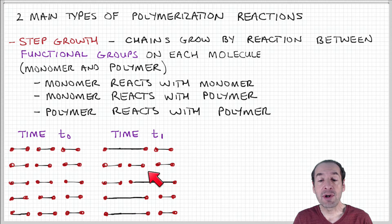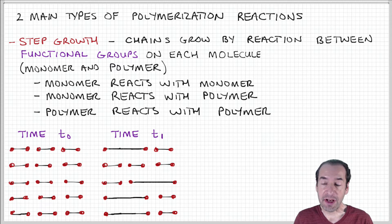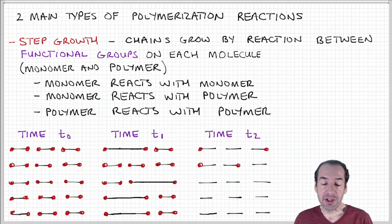Now we have four molecules, four dimers, and the remaining collection of molecules in our sample are still monomers. Then, imagine at some later time, the reaction continues.